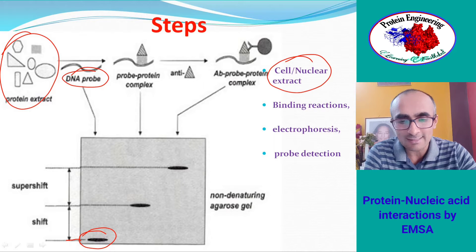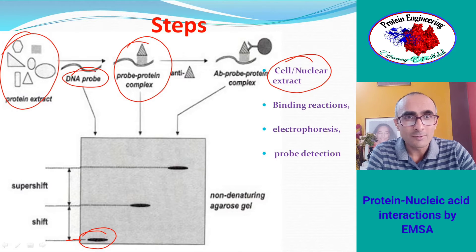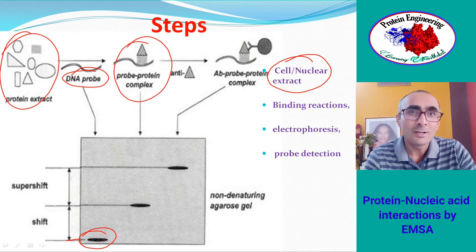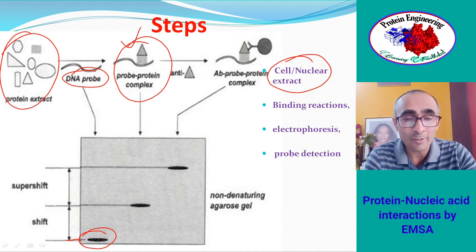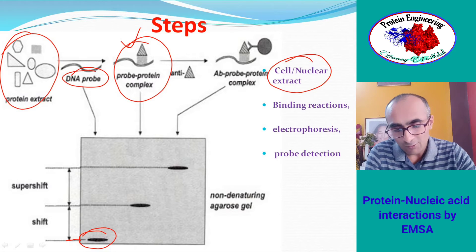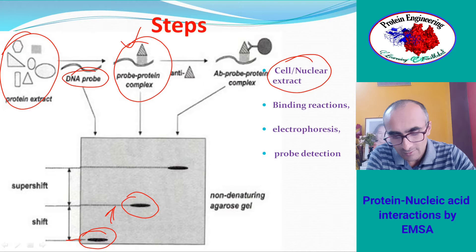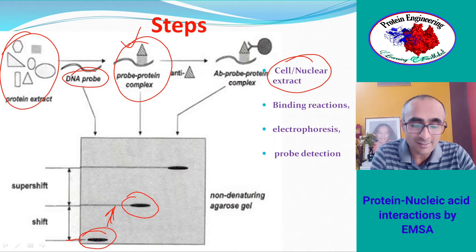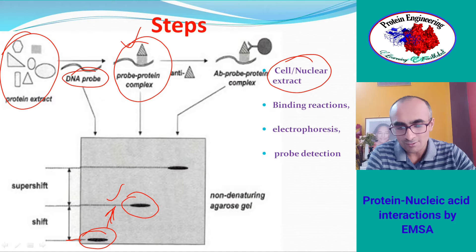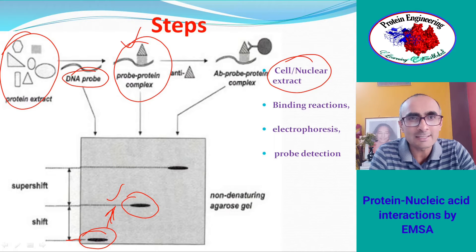This labeled DNA probe is then added to the protein extract. After addition, the DNA probe forms a complex with the protein — for example, a specific transcription factor would bind to the DNA probe. This forms a protein-probe complex of high molecular weight. When you run electrophoresis and perform autoradiography, you will see that the probe has shifted to a higher molecular weight position, because the probe is now bound to the protein and the entire protein-probe complex is being detected. If you observe this kind of shift, it means there is a protein in the cell extract that is binding to the probe.